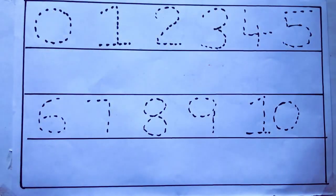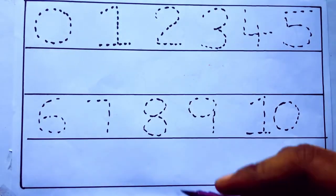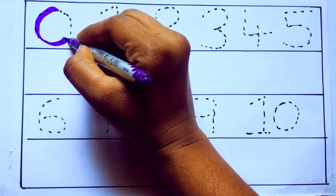Let's draw numbers. Violet color, 0. Z-E-R-O.